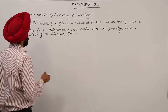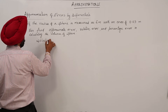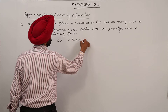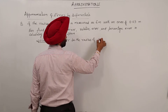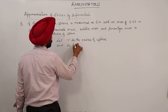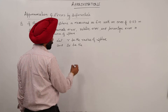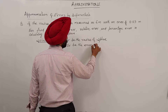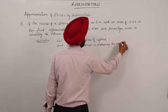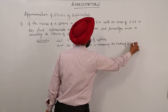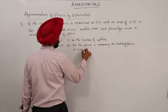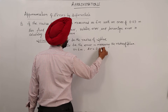Now for the solution, let small r be the radius of the sphere and delta r be the error in measuring the radius of the sphere. From the question, r is equal to 6 meters and delta r is equal to 0.03 meters.